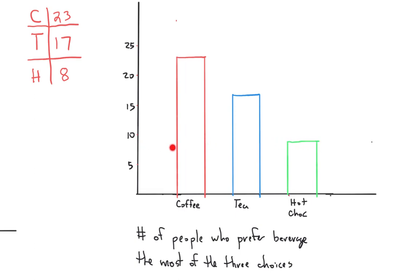We can see that the bar is at height 8 for hot chocolate, and similarly, we'd have 23 for coffee and 17 for tea. Now, it's a good idea to keep some space between the categories so they don't look all bunched together — they should look like totally different, unrelated categories. Once we get into histograms, we'll want our bars touching because it's breaking up the x-axis in a numerical way. But here, this area actually means nothing, so we have space between our bars.